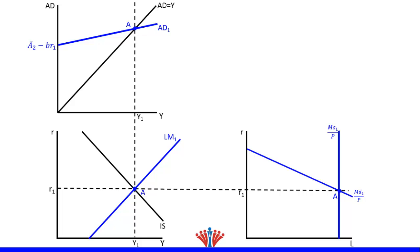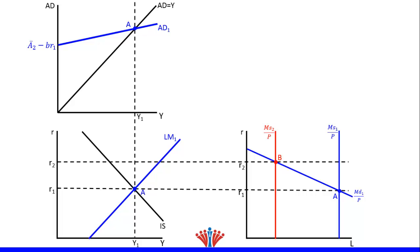Let's assume there is a negative shock in the money market, such as an increase in price level. This will result in lower real money supply, and consequently the MS curve will shift to the left — we will label it MS2. We will get a new equilibrium point at the intersection between MS2 and the money demand curve, and label it point B. We will draw a horizontal dotted line to reflect the new equilibrium real interest rate R2 in the money market and IS-LM model.